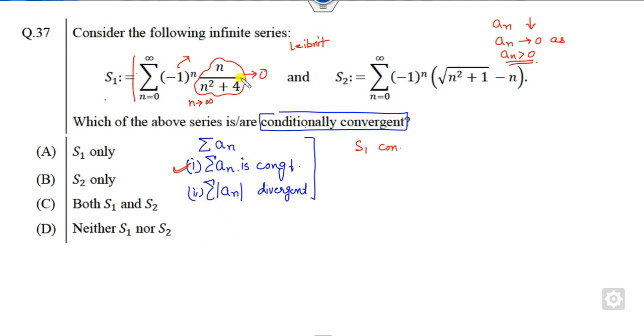If you take the modulus, this is nothing but n upon n squared plus 4. Clearly this is a divergent series. If you consider b_n is 1 by n and by using the p-test, it is divergent. So it means modulus of a_n is divergent. It means S1 is conditionally convergent.